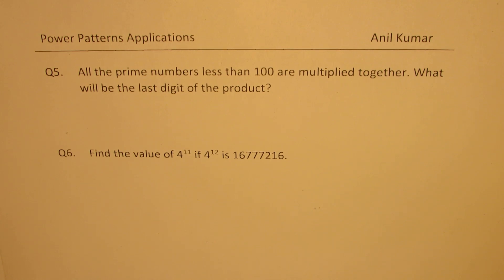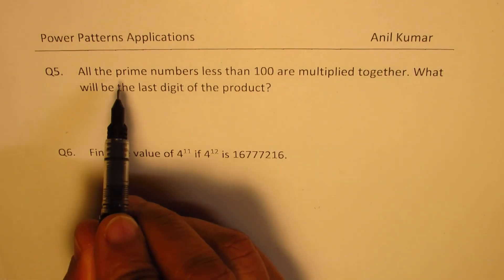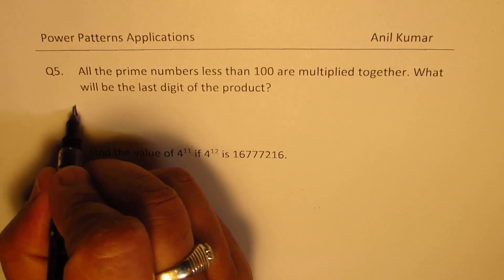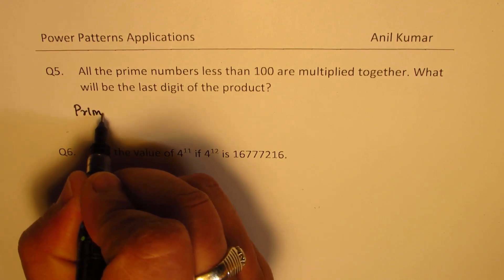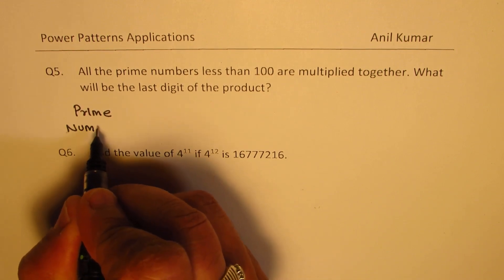You can always pause the video, answer the question, and then look into my suggestions. So let's try to answer question number five, which says all prime numbers less than 100. So let us list the prime numbers and see what could be the last digit when they are all multiplied.